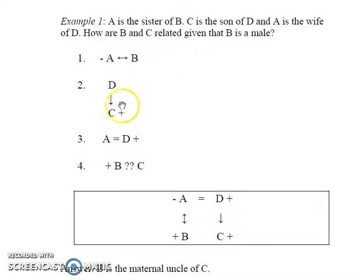C is the son of D, so here C is a male and so the plus sign here. Downward arrow represents C is a child of D. Next, A is the wife of D, therefore D is the husband of A and hence D is a male. And the positive equal to sign denotes their marriage.